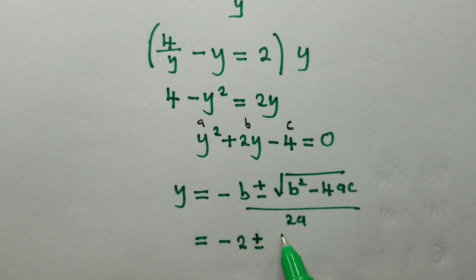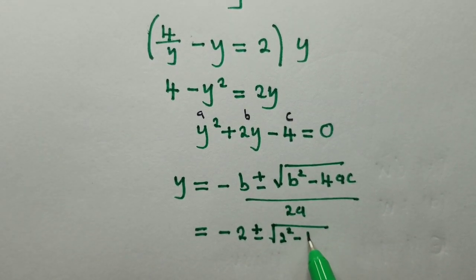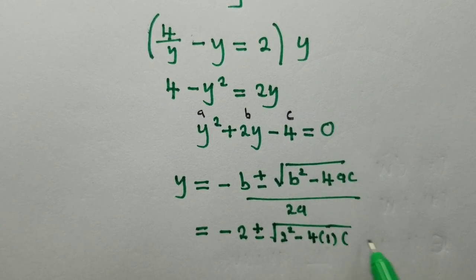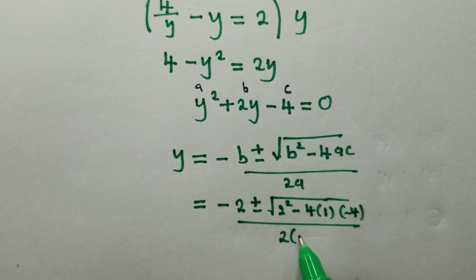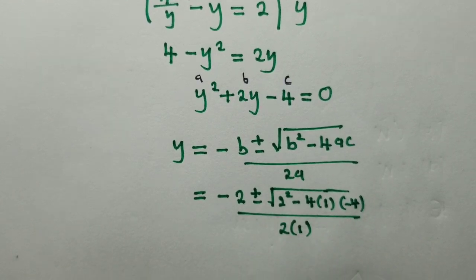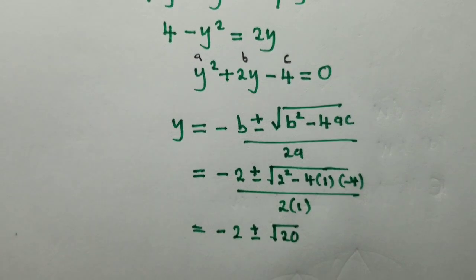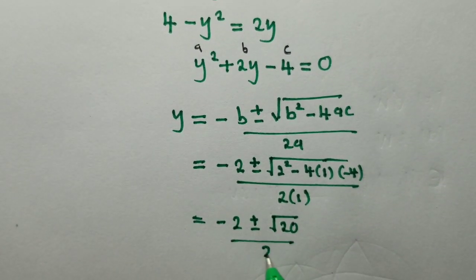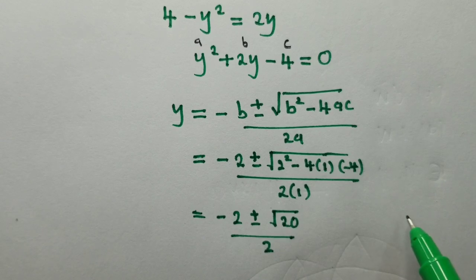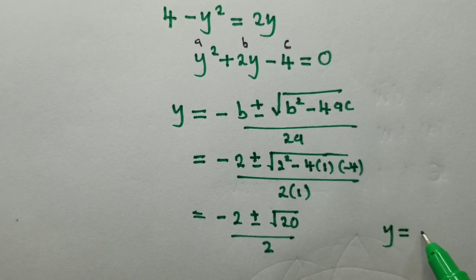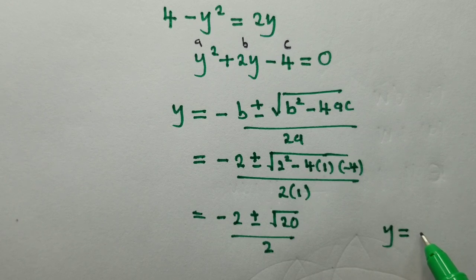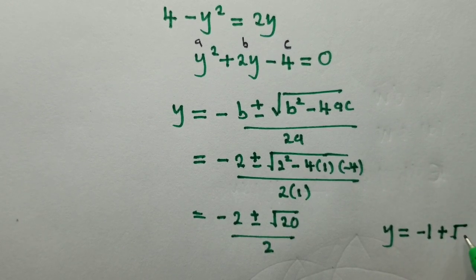So this is what I'm getting. Right here, it's 2 squared minus 4. a is 1. c is negative 4. Over 2 times 1. a is 1. When we solve nicely, we shall get something like this. This is what we're getting over 2, of which, in this case, we shall say our y would be equal to negative 1 plus root 5.